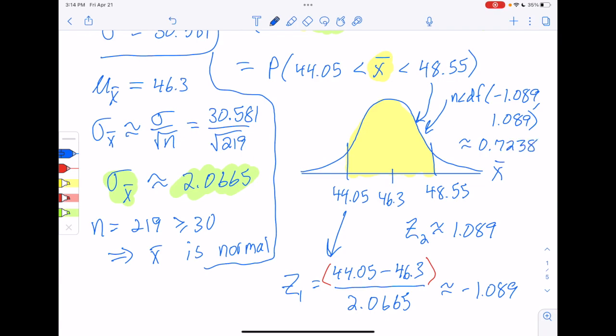So that normal CDF ends up being 0.7238. And that is the area. And therefore, that's the probability they're requested. So that's the answer that we would put into active learning.